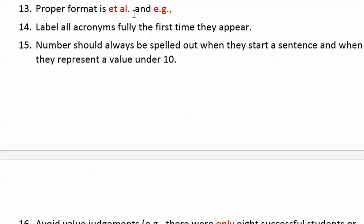When using 'et al.' — referring to a number of researchers — type 'et al.' with a period. 'E.g.' is written as e-period-g-period, followed by a comma, and similarly 'i.e.' is i-period-e-period, followed by a comma. Don't forget the comma with e.g. and i.e. Number fourteen: label all acronyms fully the first time they appear, so the reader understands what they are, and then you can use the acronym from then on.